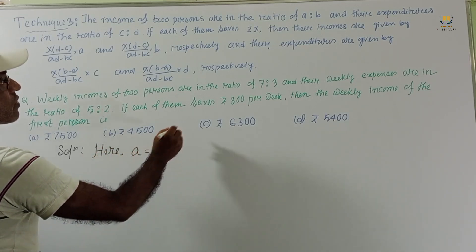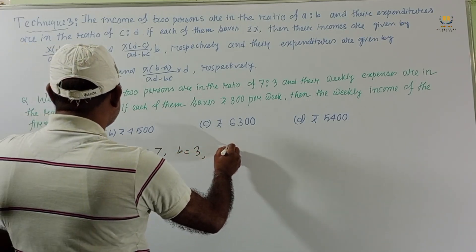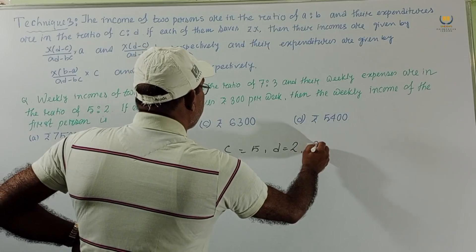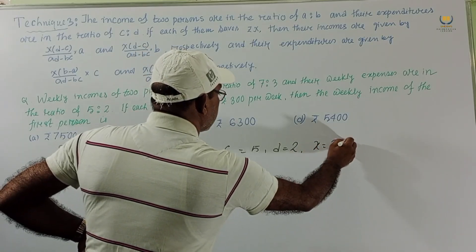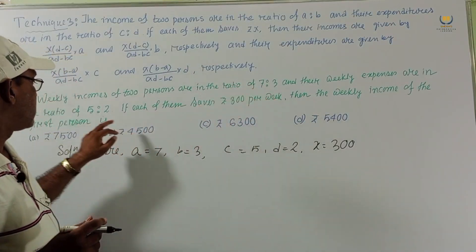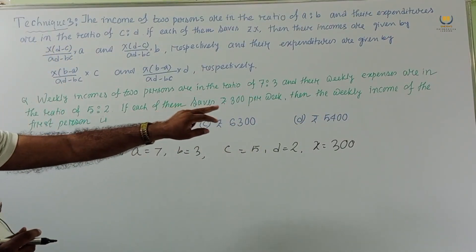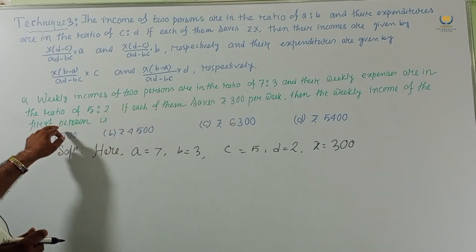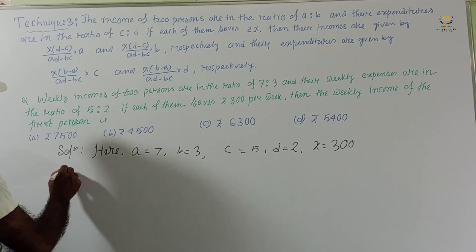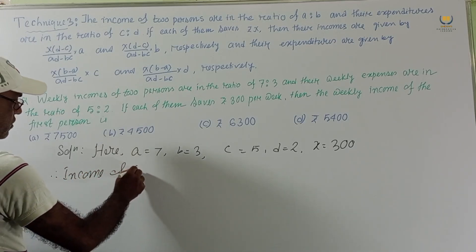Solution: the given values are a = 7, b = 3, c = 5, d = 2, and x = 300. We need to find the income of the first person.